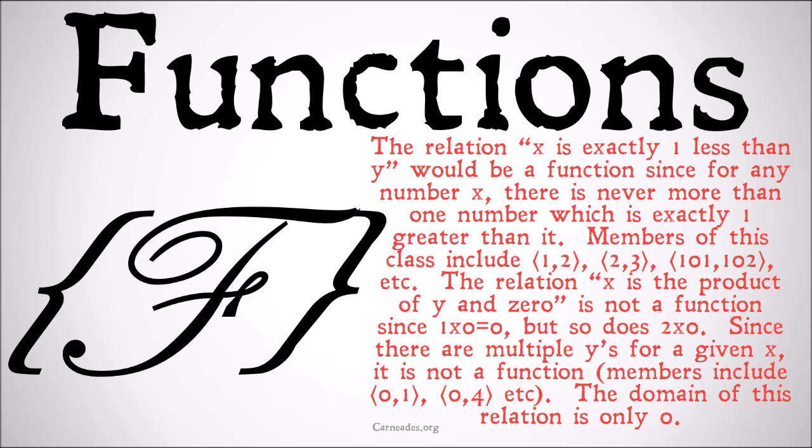The relation 'x is the product of y and zero' is not a function since 1×0=0 but so does 2×0. Since there are multiple y's for a given x, it is not a function. Members of the relation would include (0,1), (0,4), etc. The domain of this relation is only 0 but it has a wide ranging range, and so it's not a function.